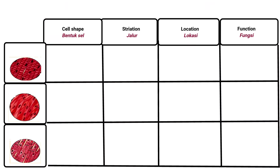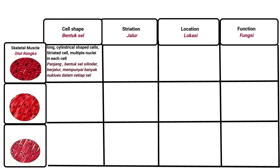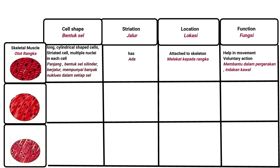There are three types of muscle tissue. The first is skeletal muscle — cell shape: long, cylindrical, striated cells with multiple nuclei in each cell. Location: attached to skeleton. Function: helps in movements; voluntary action.